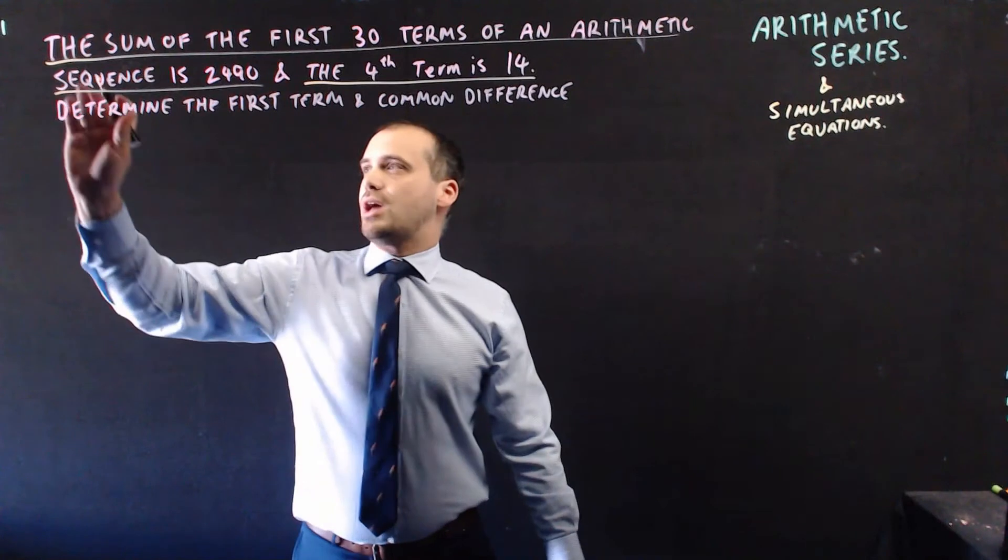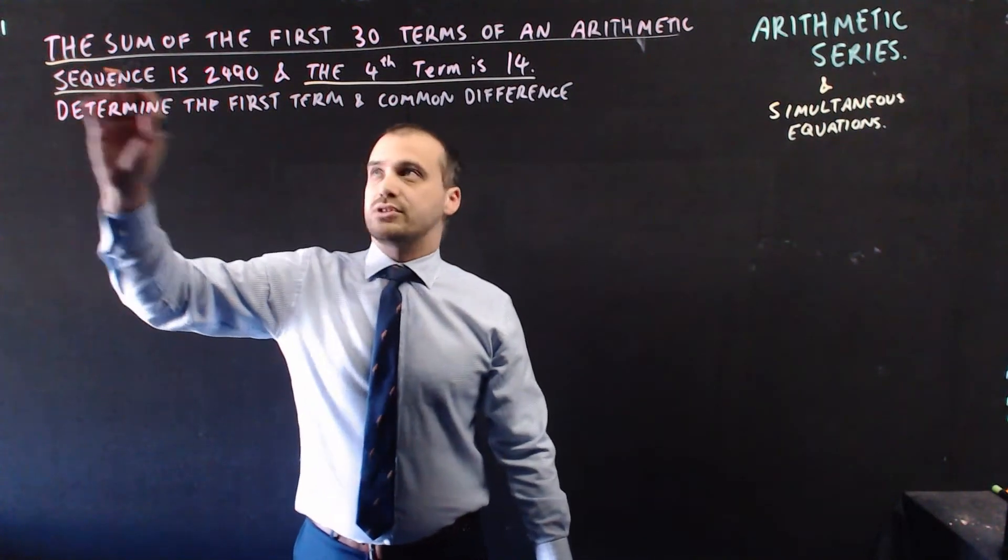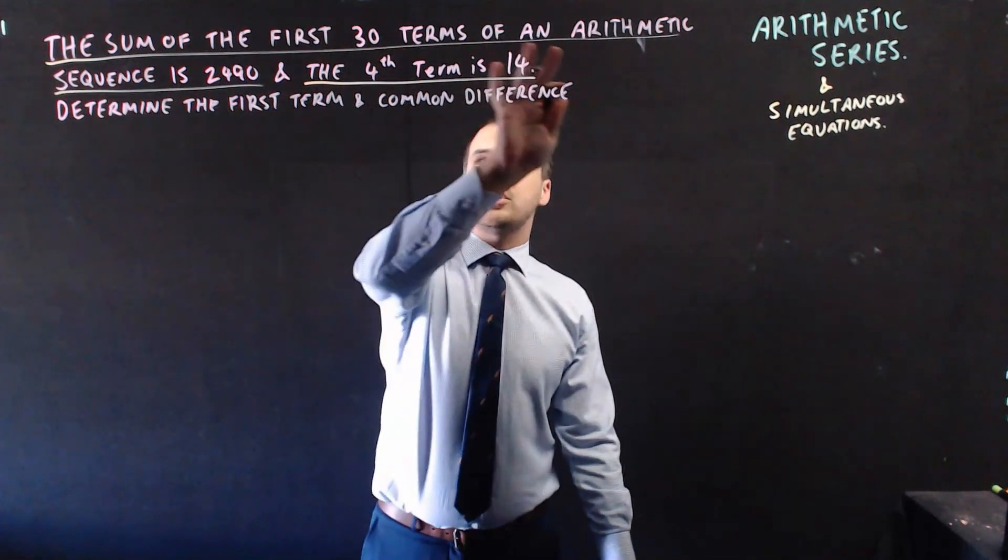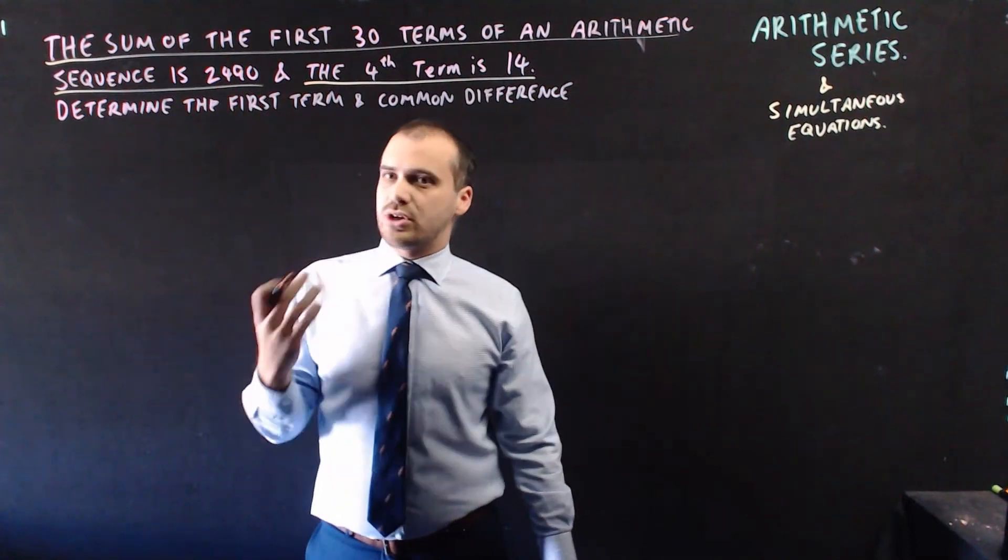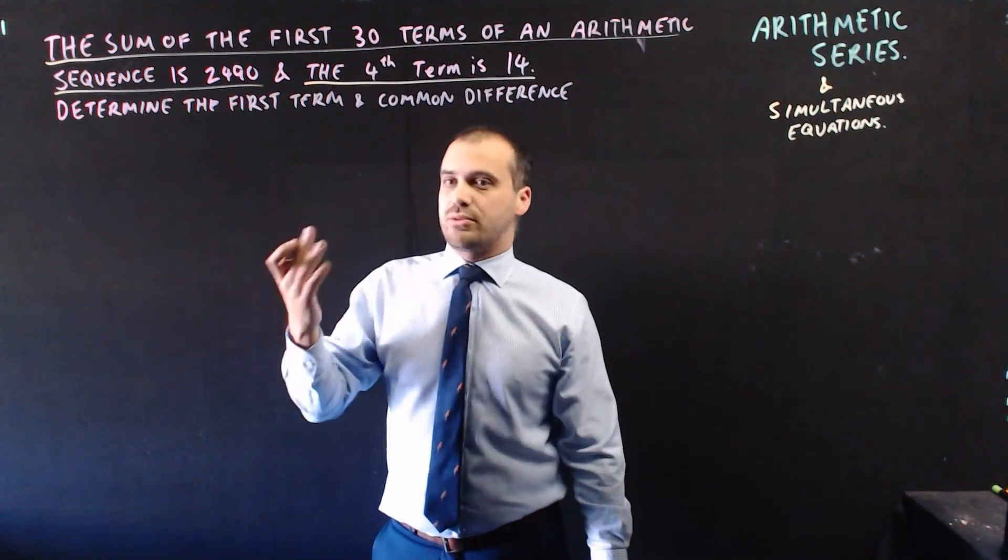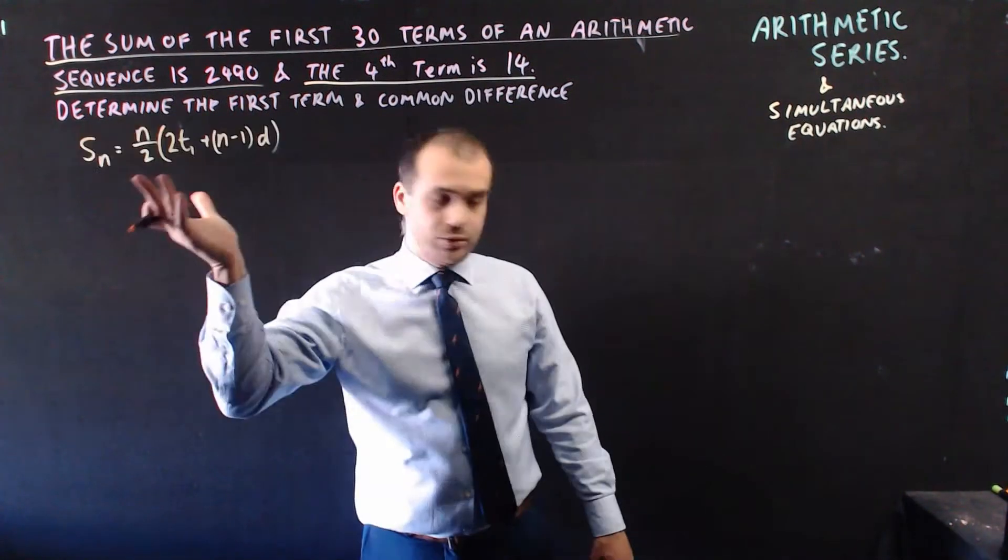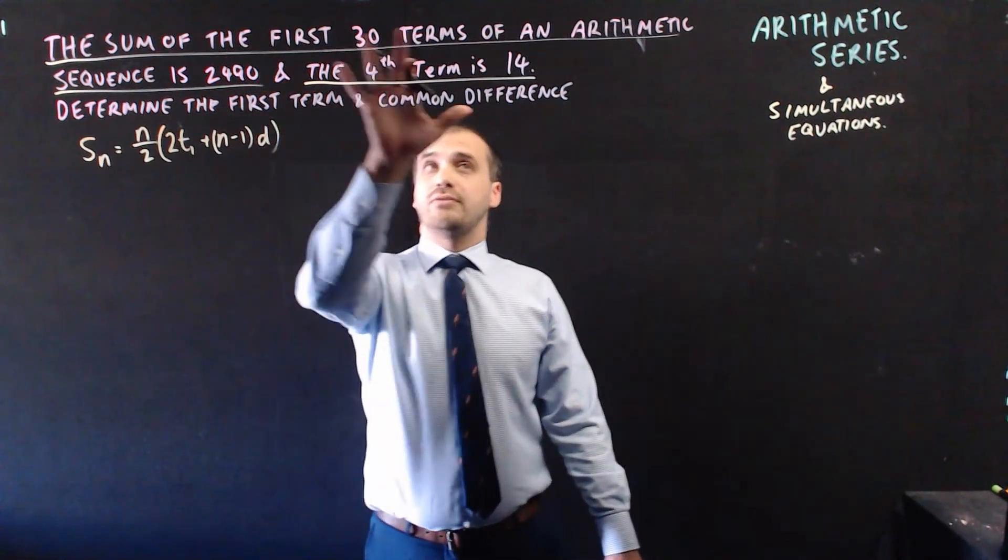So let's do the arithmetic sequence part first. It says the sum of the first 30 terms is this. So we know the sum of an arithmetic sequence formula already. It looks like that, and then we can put that information into it.